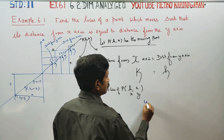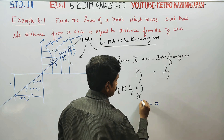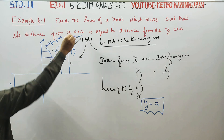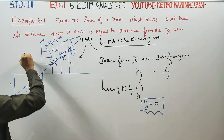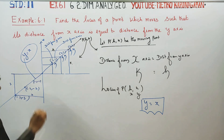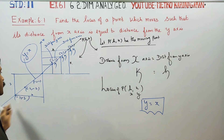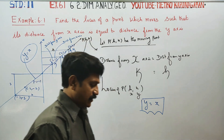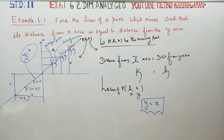If y is equal to x, h is equal to k — it is a straight line passing through the origin. If y is equal to x, then the sum is complete.